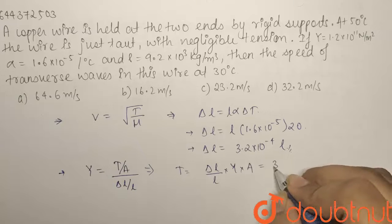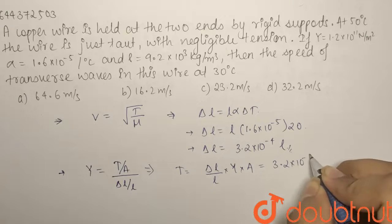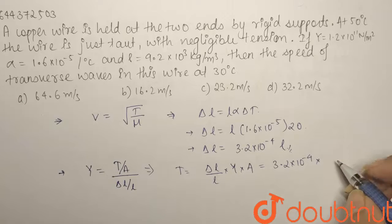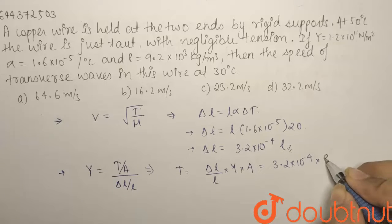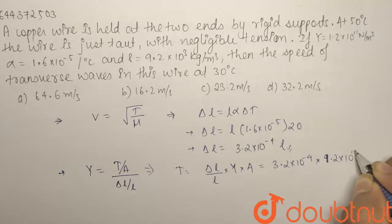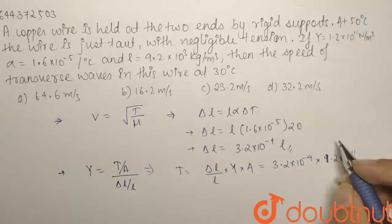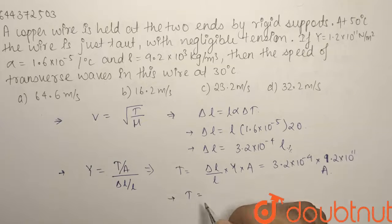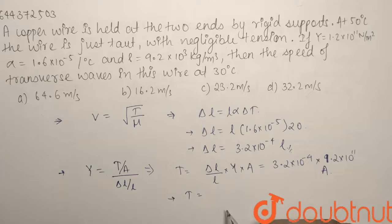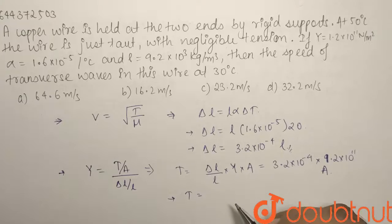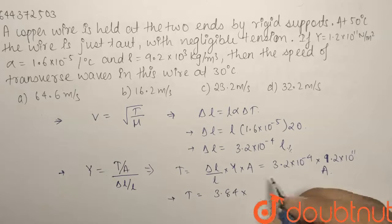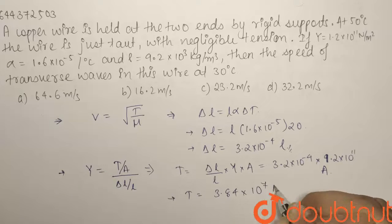Tension will be equals to delta L by L × Young's modulus × area. Delta L by L we have found out is 3.2 × 10^-4 L and L will cancel out each other × Young's modulus, what we have been given is equals to 1.2 × 10^11 × the area. We have not been given the area of the wire, so let us assume it to be A itself. From here our tension comes out to be equals to 3.84 × 10^7 × area A.